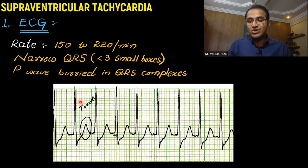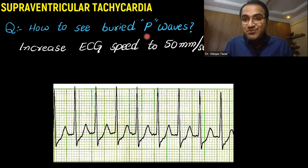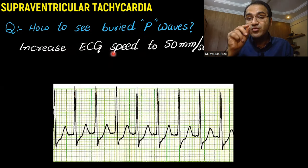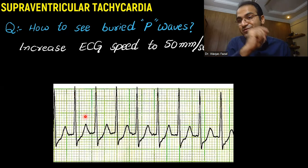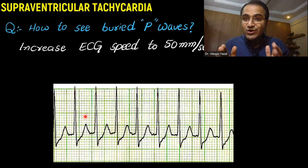If you want to see the buried P waves, there is a small trick: increase the speed of the ECG machine from 25 mm/s to 50 mm/s. If you double the ECG speed, you will be able to appreciate the presence of P waves, as they become visible at the faster paper speed.